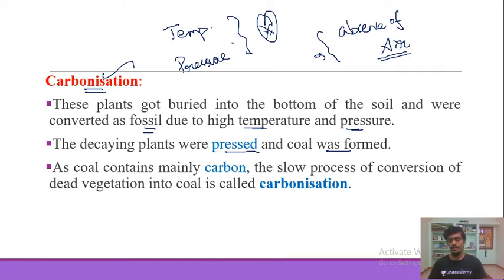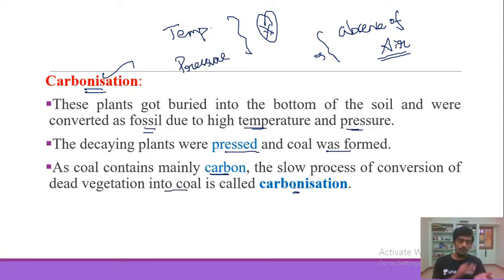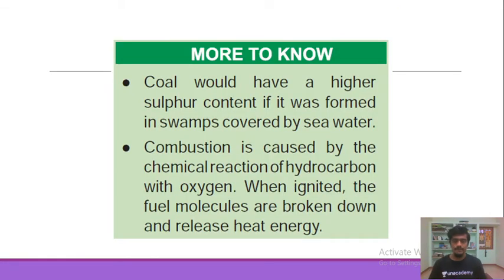The plants and decaying matter are converted into fossils and then into coal. Coal contains mainly carbon. The slow process of conversion of dead vegetation into coal is called carbonization. Coal would have a higher sulfur content if it was formed in swamps covered by sea water.